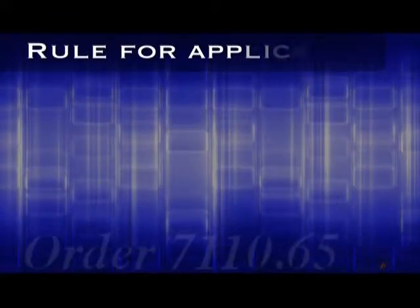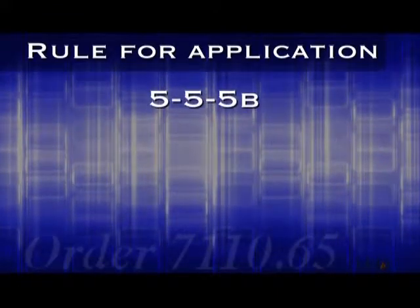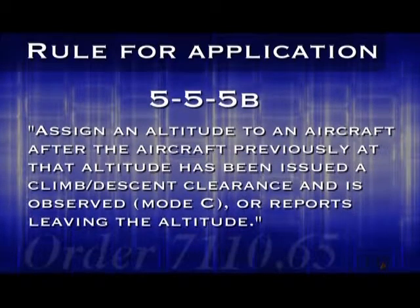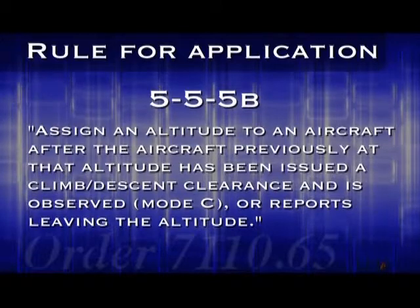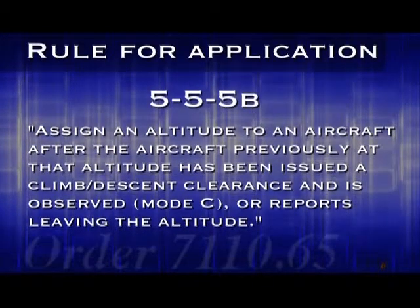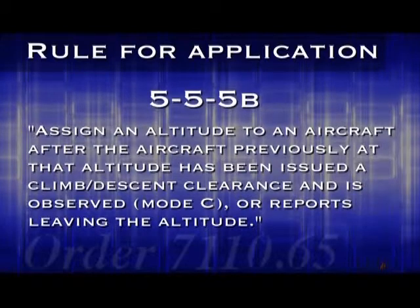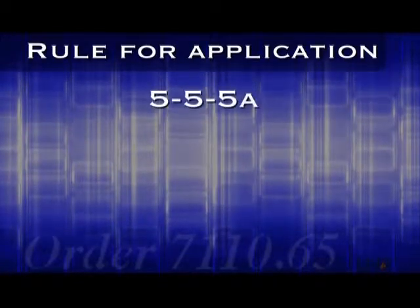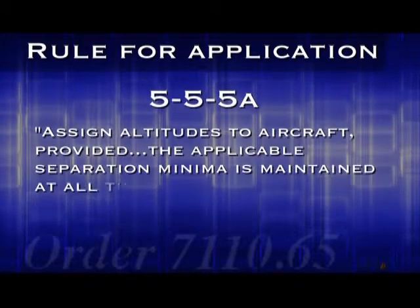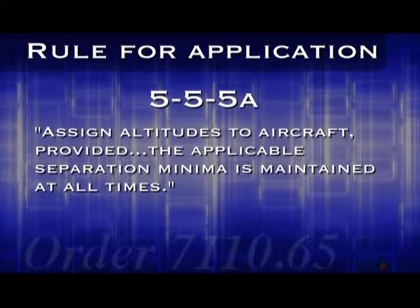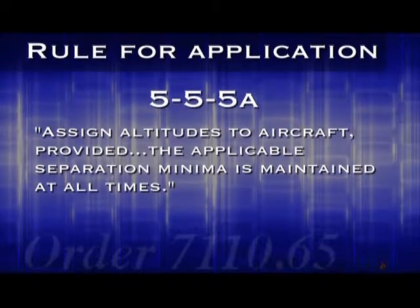Now for the primary rule governing the application of vertical separation. Let's return to Chapter 5, Section 5 and look at Paragraph 5b: assign an altitude to an aircraft after the aircraft previously at that altitude has been issued a climb or descent clearance and is observed with mode C or reports leaving the altitude. But remember what Paragraph 5a said: assign altitudes to aircraft provided the applicable separation minima is maintained at all times. So as long as at least one other type of separation is maintained, such as 3 miles of lateral separation, you can descend or climb aircraft to the same altitude.